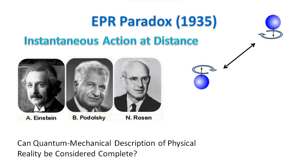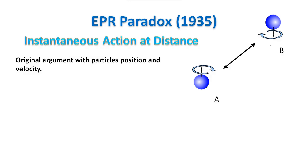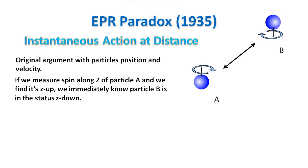In 1935, Einstein, Podolsky and Rosen wrote an article in which they argued that the description of physical reality provided by quantum mechanics is incomplete. In the paper they proposed a thought experiment involving a pair of particles in an entangled state. The original argument for the EPR paradox was based on particles' position and velocity. We will use spin of particles, which does not change the nature of the discussion. The main point in the EPR paradox is that if we measure spin along z of particle A and we find it is z-up, we immediately know particle B is in the state z-down.